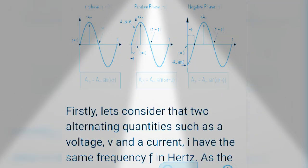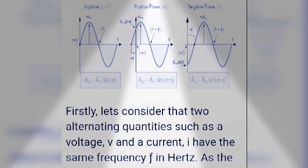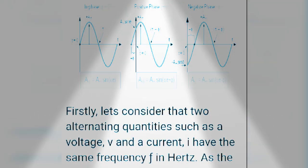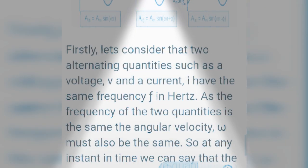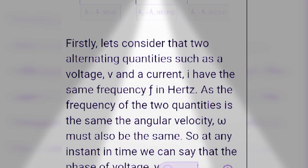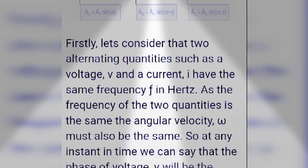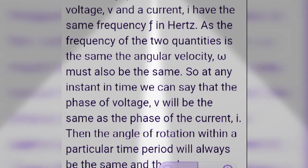Firstly, let us consider two alternating quantities such as voltage V and current I that have the same frequency in Hertz. If the frequency of the two quantities is the same, the angular velocity must also be the same.